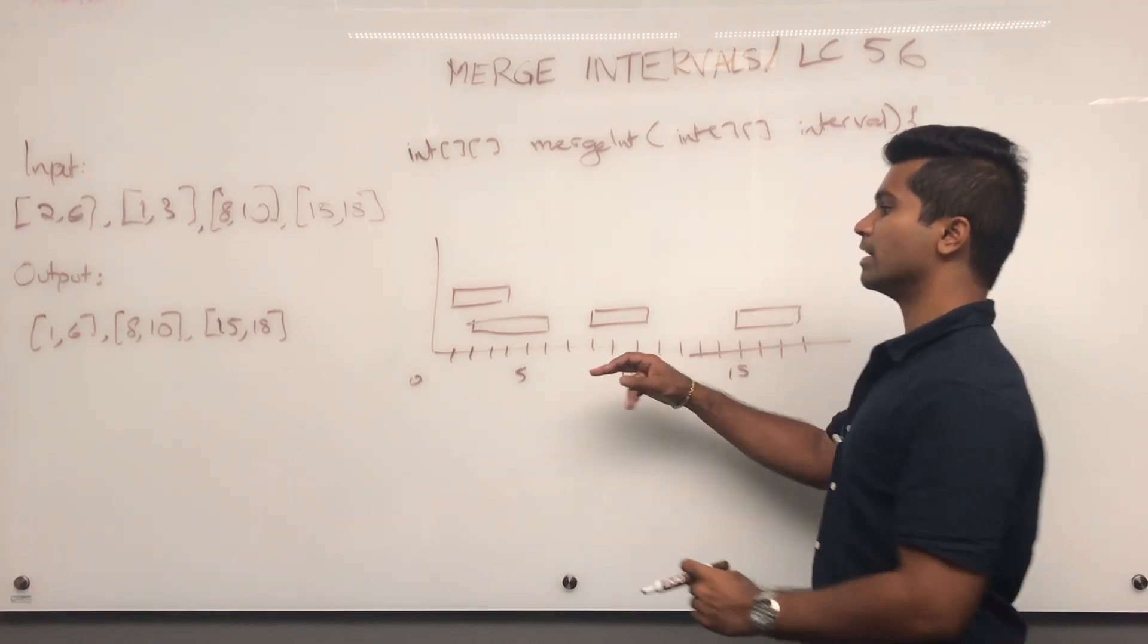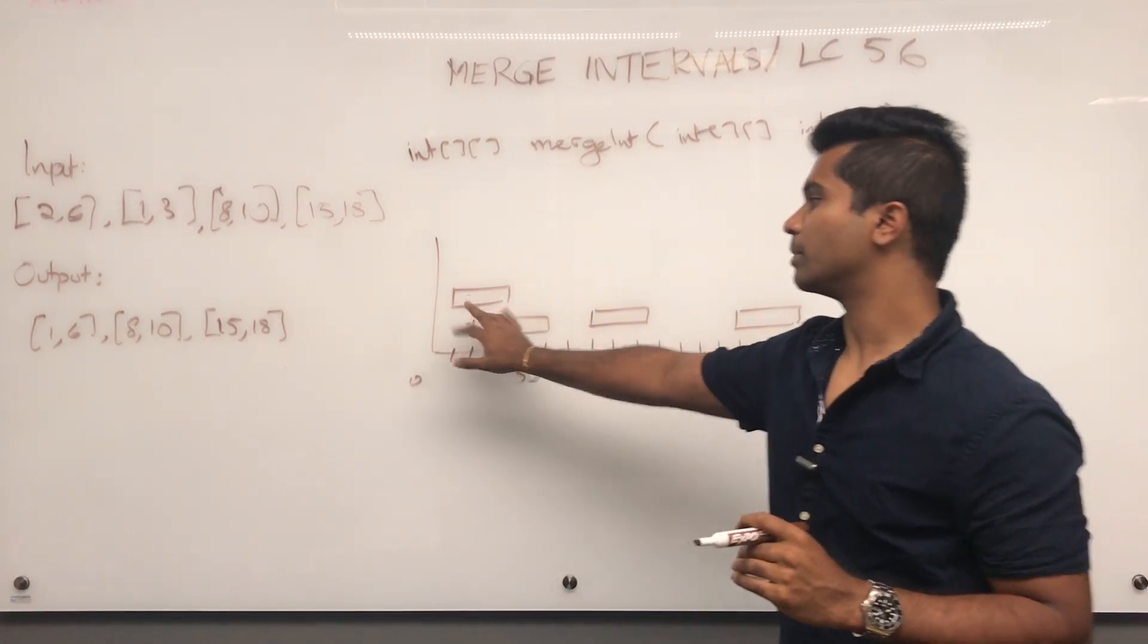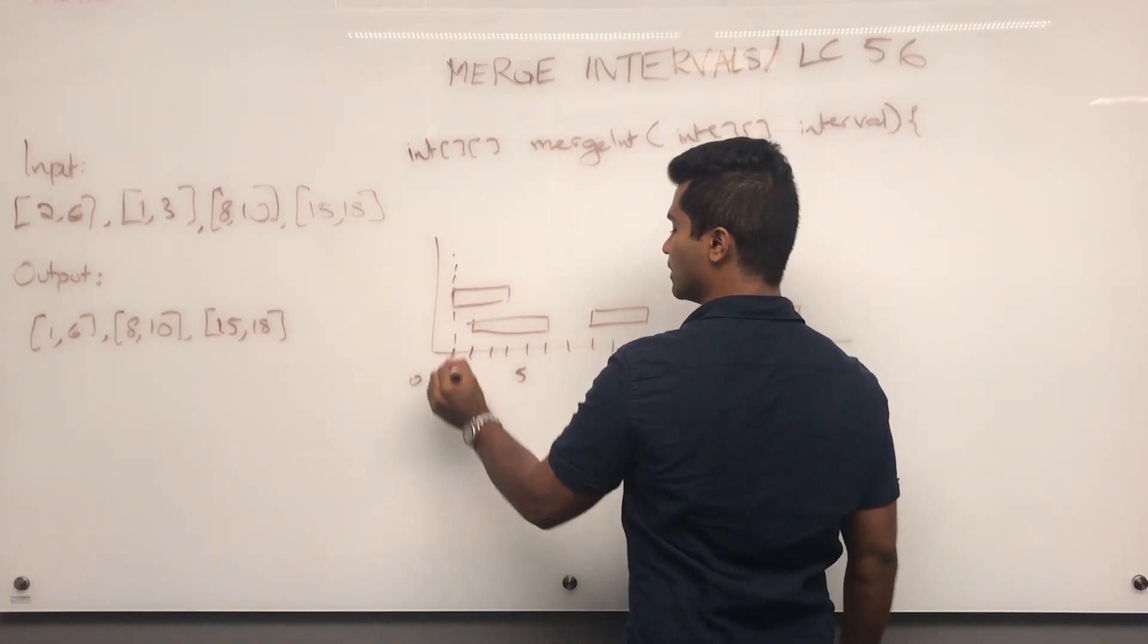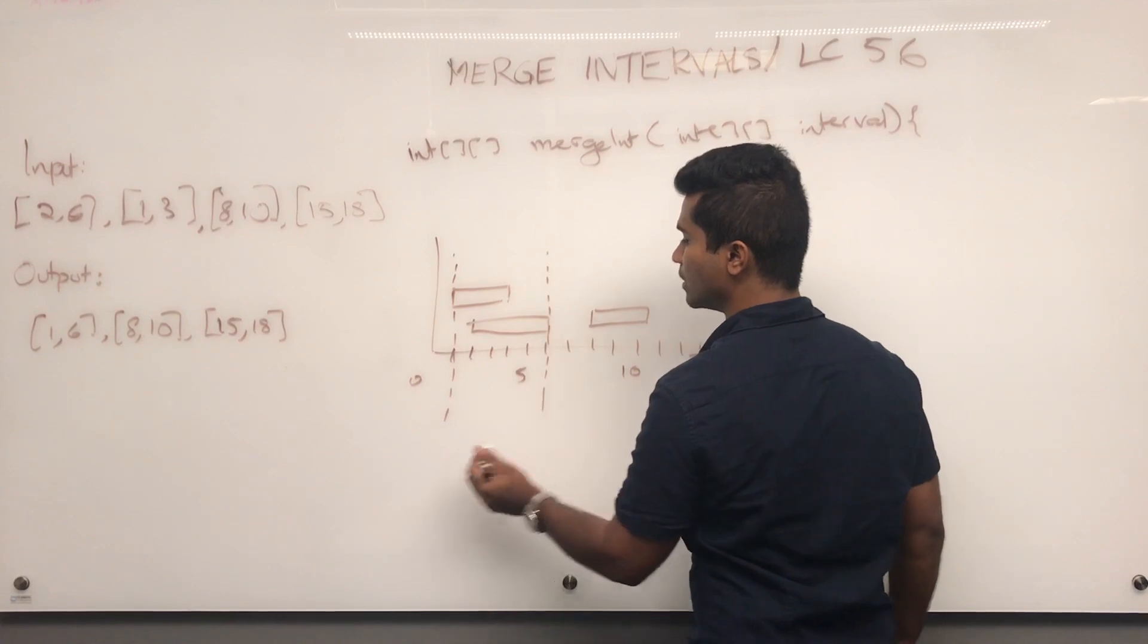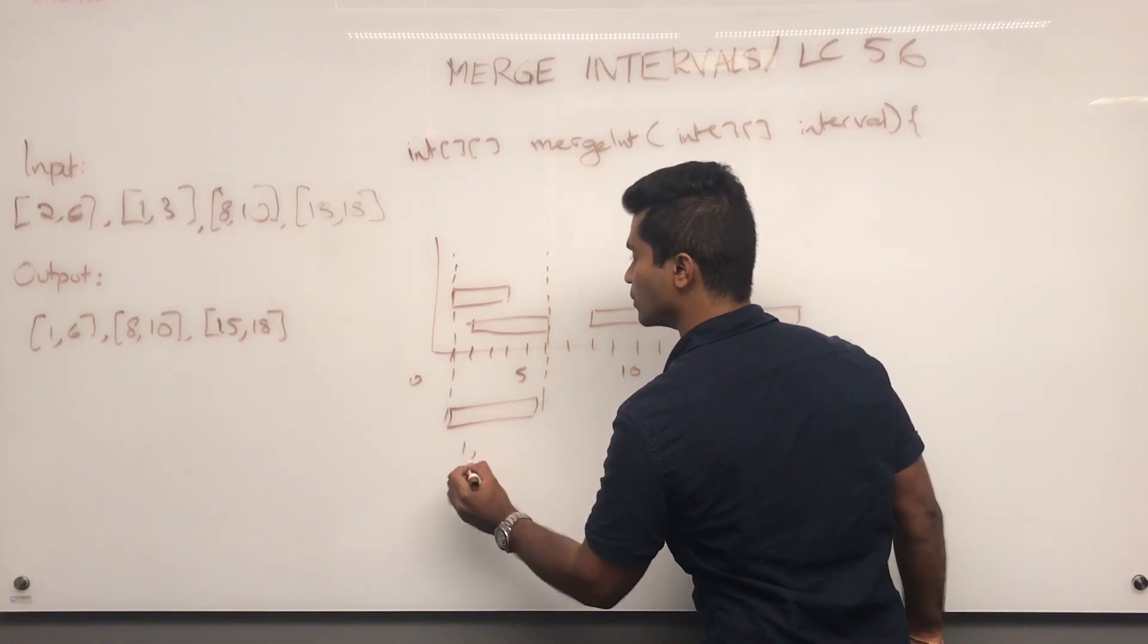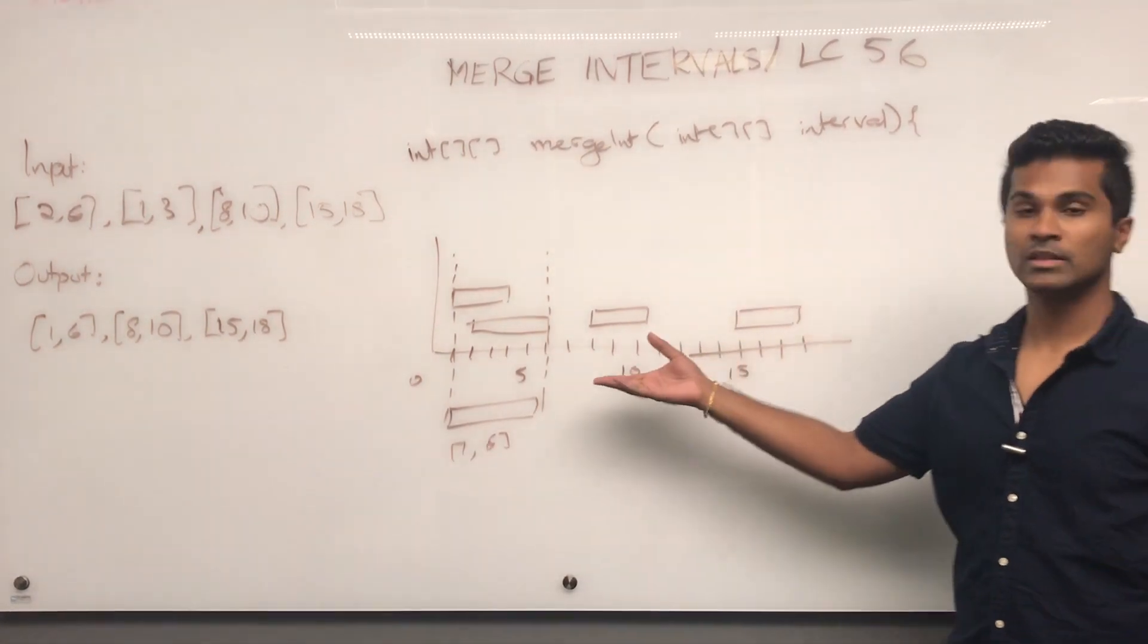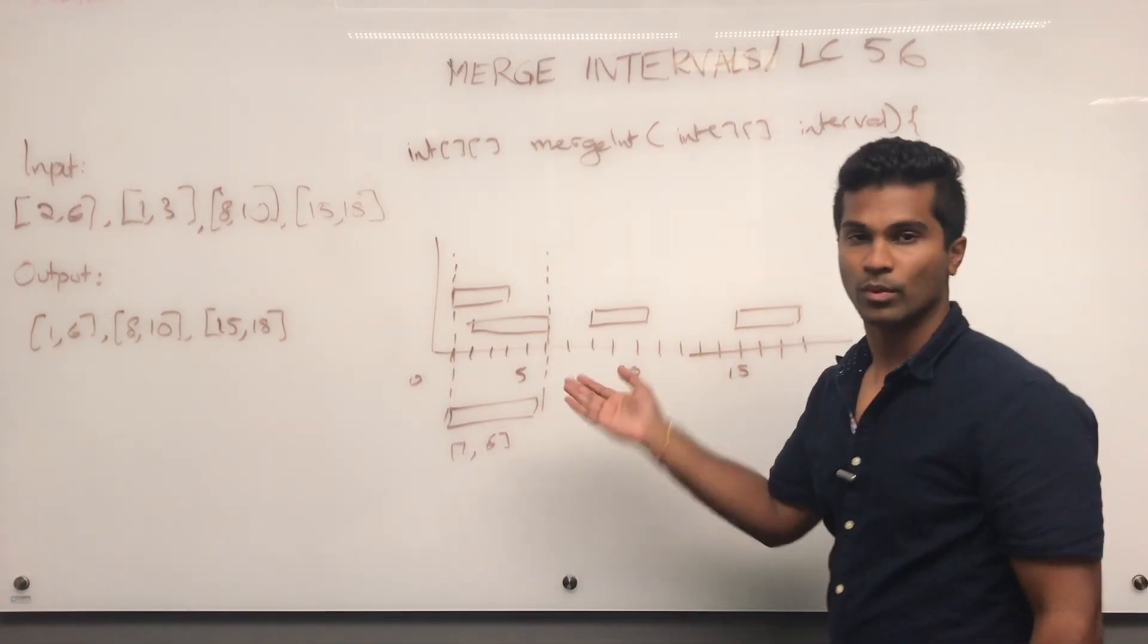What they want is take all the overlapping intervals and combine them together. So for example, these two are getting merged. What they want us to return is 1, 6, which is the output here. 8, 10, 15, 18 don't matter because it's just what was given.